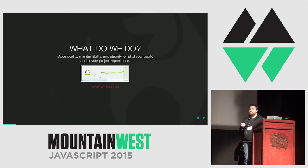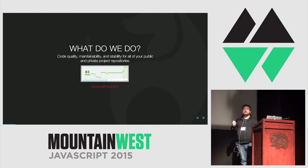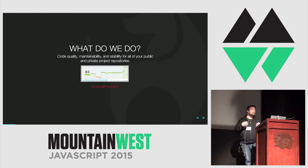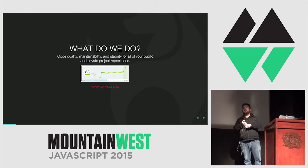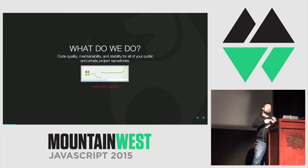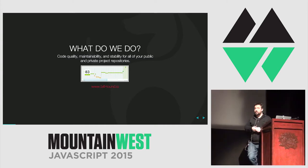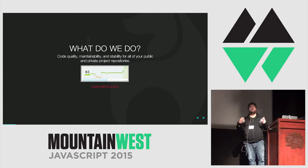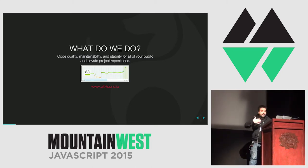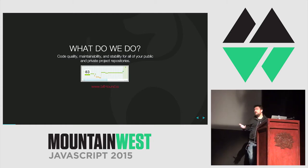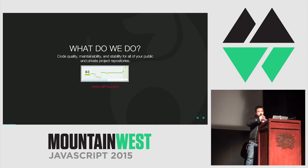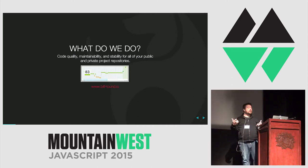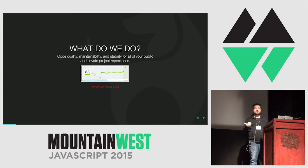A little backstory about what Bithound does. As developers, we generate a lot of data just doing our jobs. We generate code — there are diffs we create, code we write, code we delete, tests we write, tests we run, issues we open and close, bugs we open and close. There's an inherent wealth of data generated as we work on software projects. Our goal at Bithound is to take all this data and use it to determine an overall quality or health score — a baseline metric to determine how projects are working.